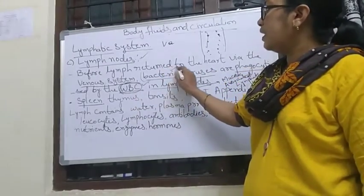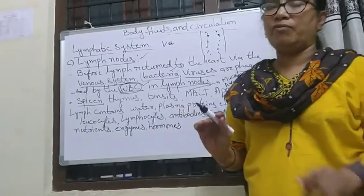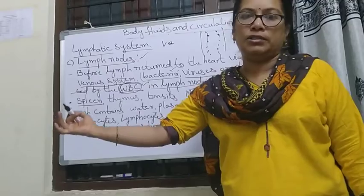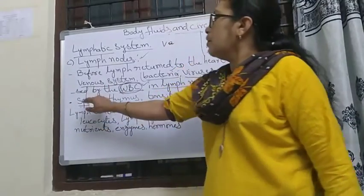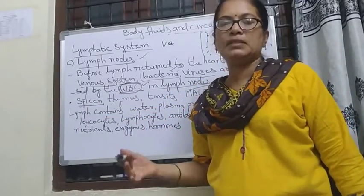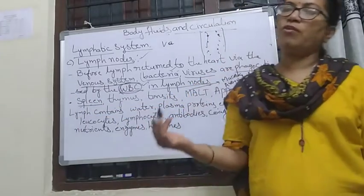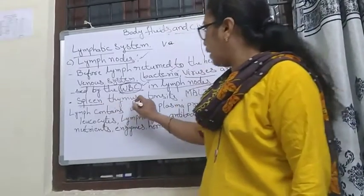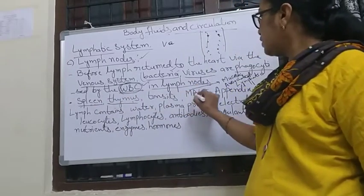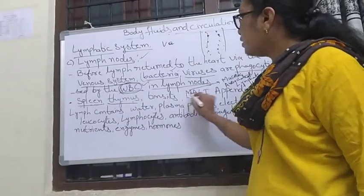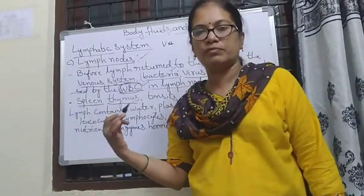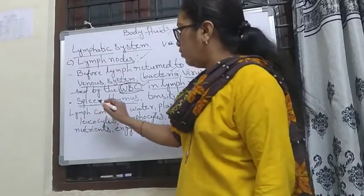These WBC engulf the bacteria and viruses and clear the blood, then it goes to the heart. Next, there are some organs which help in the formation of lymphocytes. What are they? Spleen, thymus, tonsils, MALT, and appendix. These are the main organs which produce the lymphocytes.